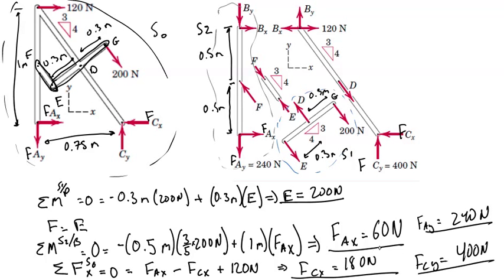We have Fax is equal to 60 newtons in the direction drawn, Fcx is equal to 180 newtons in the direction drawn in the free body diagrams, Fay is 240, and Fcy is 400 newtons, all in the direction drawn in the free body diagram. To finalize this, we should write these as vector expressions in reference to the S0 free body diagram.